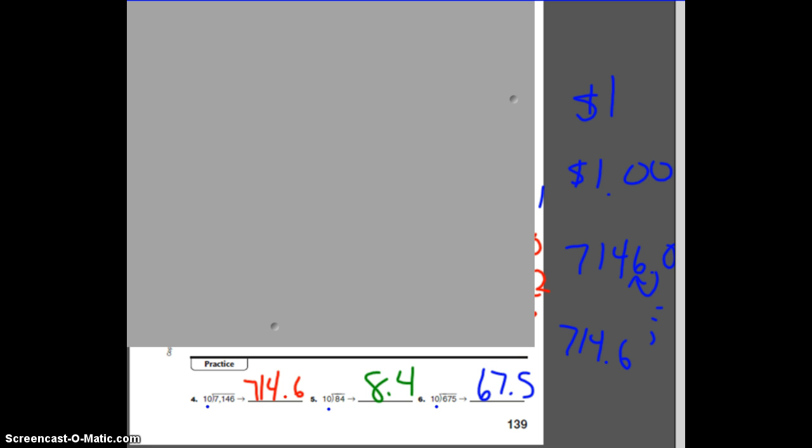You can still do the long division like we did, and you'll get the right answer. It's just if you want a shortcut when you're dividing by 10, that makes it go a lot faster. Now, if it works dividing by 10, it's going to be the same with 100, only if it's 100, you're going to move over two decimal places to the left. All right. Thanks for working with me today.